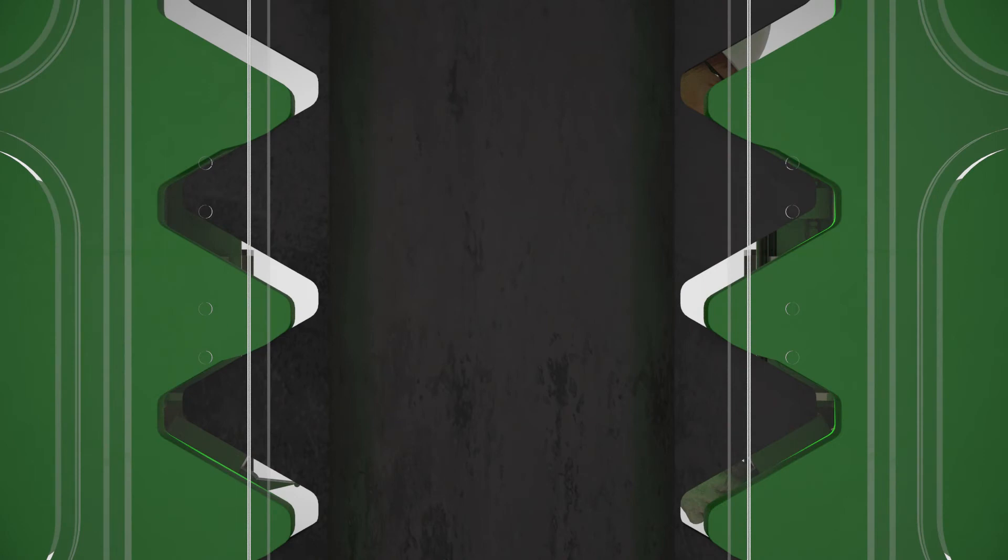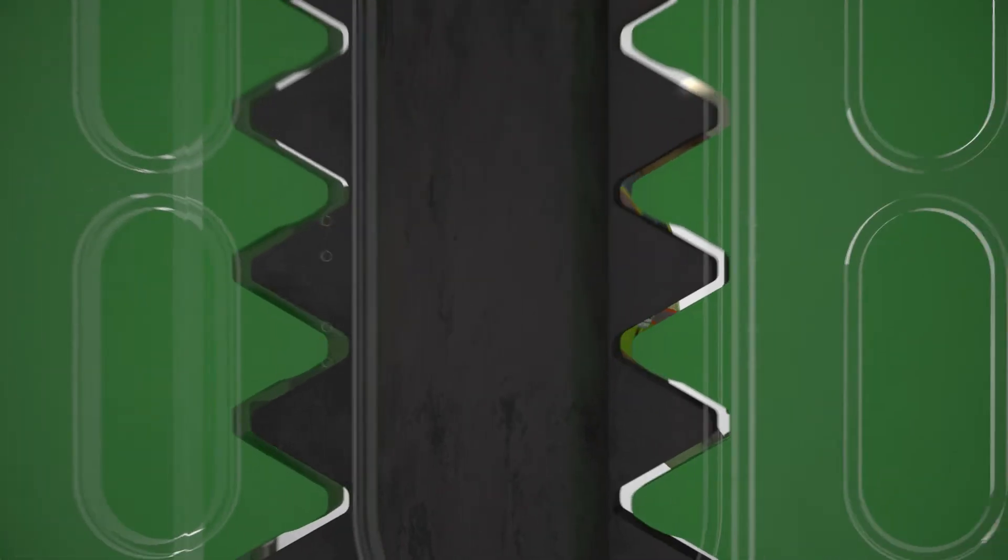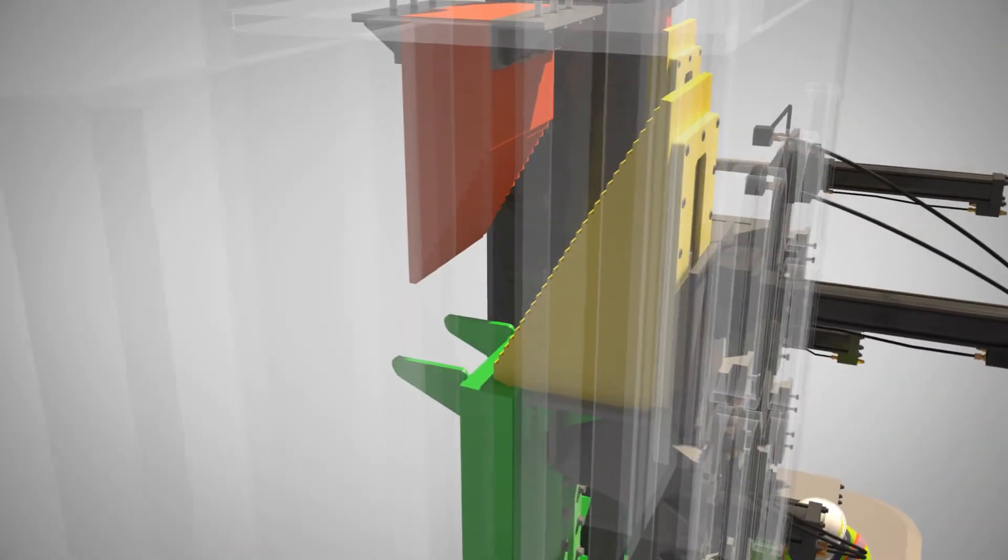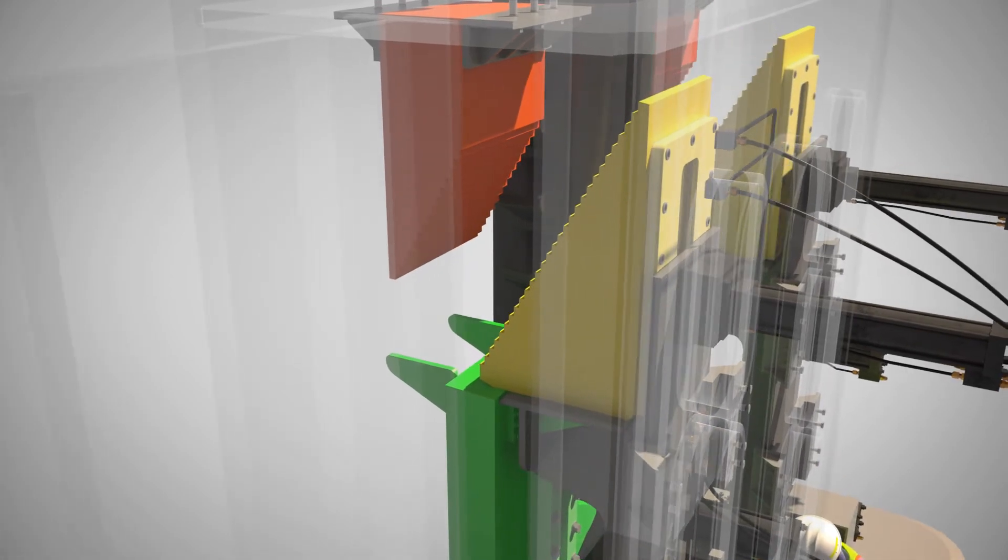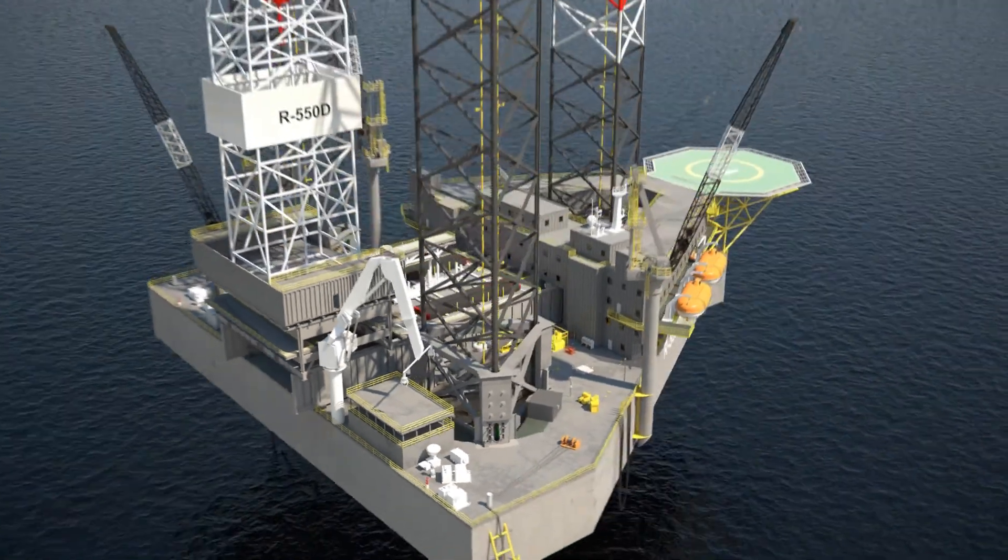Once on-site operations are completed, the jackup is ready to jack down. At this point, the jacking pinions elevate the jackup slightly to take the load off the ZenRacks. Now the wedges and ZenRacks can be easily retracted by the horizontal hydraulic cylinders out of the leg rack plates, and the hull is jacked down into the water.